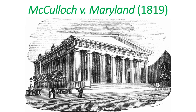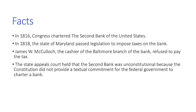The first case is McCulloch v. Maryland, argued and decided in 1819. The facts are: in 1816, Congress chartered the Second Bank of the United States. In 1818, the state of Maryland passed legislation to impose taxes on the bank. James W. McCulloch, the cashier of the Baltimore branch, refused to pay the tax. The state appeals court held that the Second Bank was unconstitutional because the Constitution did not provide textual commitment for the federal government to charter a bank.